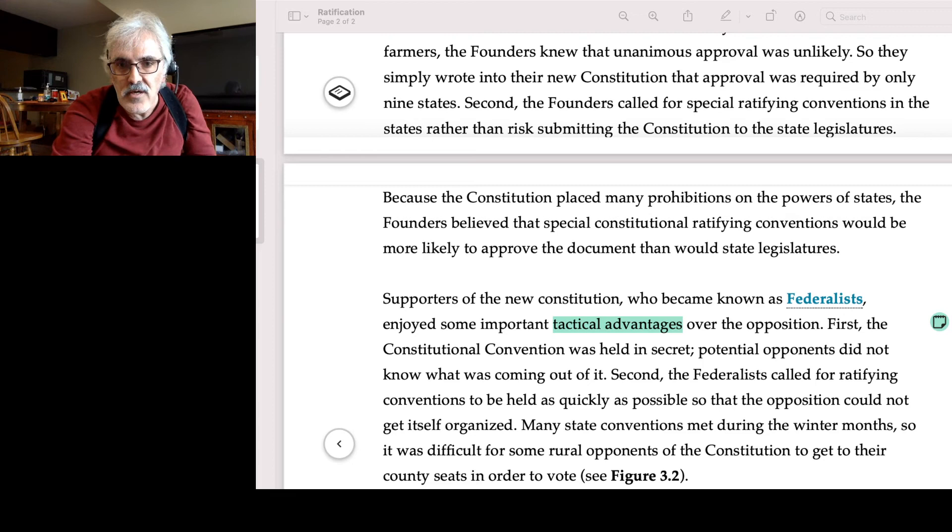Let's continue. Supporters of the new Constitution, who became known as Federalists, enjoyed some important tactical advantages over the opposition. Now, I highlighted tactical advantages because here, too, the author of the book is being Orwellian. He doesn't want to come out and say it, so he's hinting at it, using different language. First, the Constitutional Convention was held in secret. Potential opponents did not know what was coming out of it. Guess what else is held in secret? A coup d'etat.